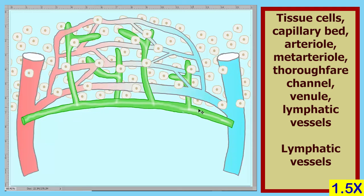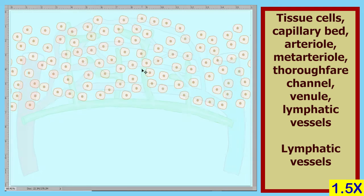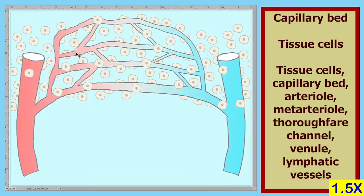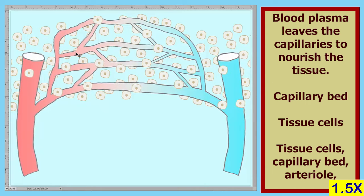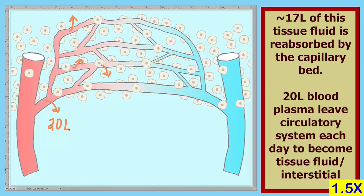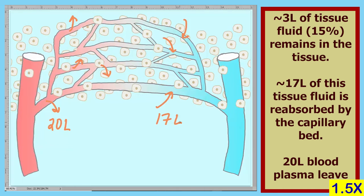Now let's explain what the lymphatic system does. Shown here are our tissue cells. All tissue cells need a blood supply so that they can receive oxygen and get rid of waste, and that is the purpose of the capillary bed. Blood plasma leaves the capillary bed to nourish the tissue. Each day about 20 liters of blood plasma leaves the circulatory system to become tissue fluid. Approximately 17 liters of this tissue fluid is reabsorbed by the circulatory system, leaving about 3 liters, or about 15%, remaining in the tissue.